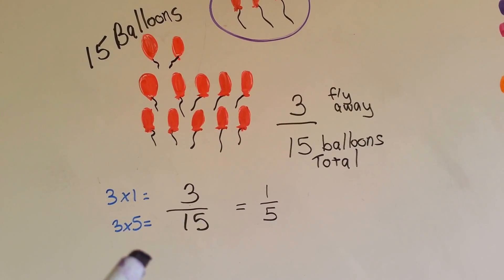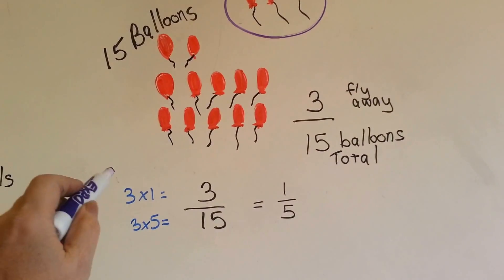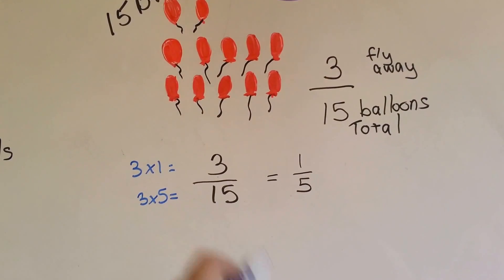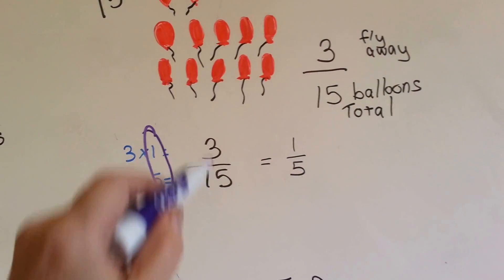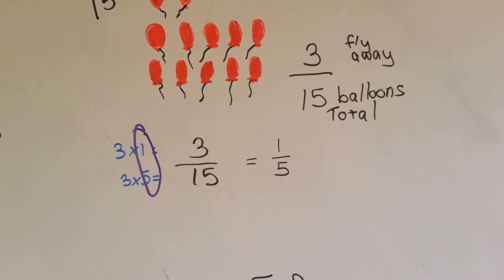Three-fifteenths. That is equal to one-fifth. Because three times one is three and three times five is fifteen. One-fifth. Three goes into fifteen five times. One over five.